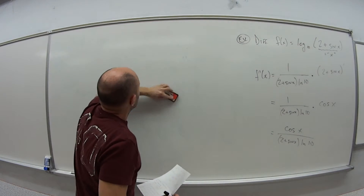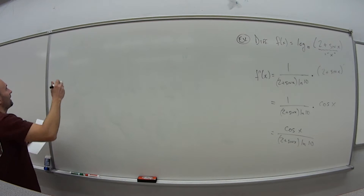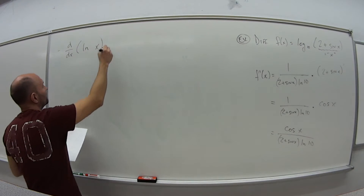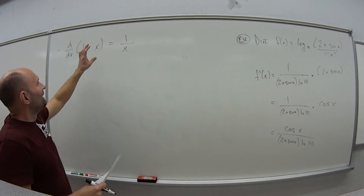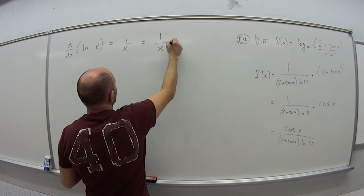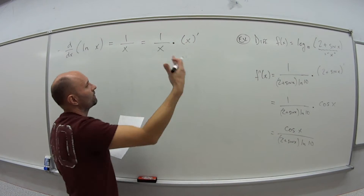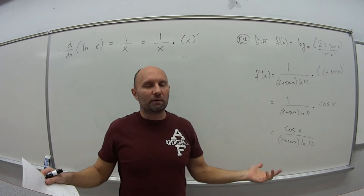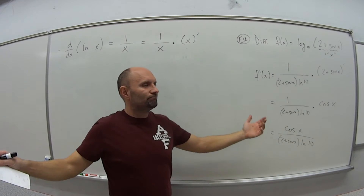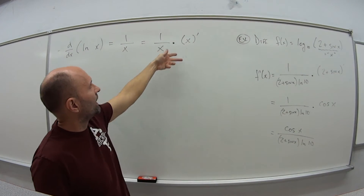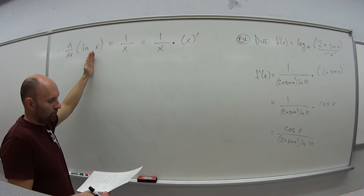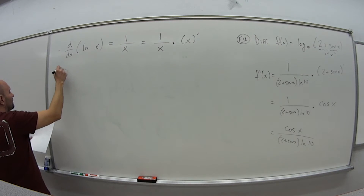Now for the special case: the derivative with respect to x of the natural log of x is simply 1 over x. More precisely, it's 1 over whatever that x piece is, times the derivative of that x piece — again, applying the chain rule. You're not going to see just natural log of x; you'll see natural log of sine of x or 2 plus sine of x, and you'll need the chain rule. The derivative of x by itself is just 1, so in the simplest case it reduces cleanly.